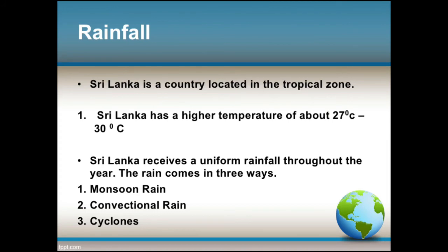Rainfall: Sri Lanka is a country located in the tropical zone. Sri Lanka has a higher temperature of about 27 to 30 degrees Celsius and receives a uniform rainfall throughout the year. The rain comes in three ways: monsoon rain, convectional rain, and cyclones.